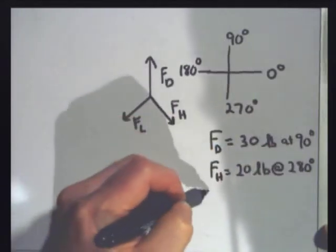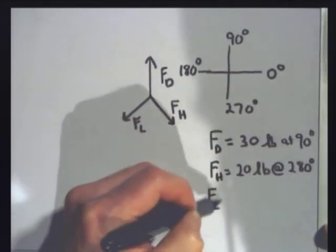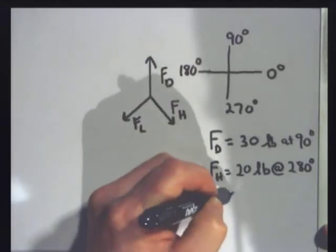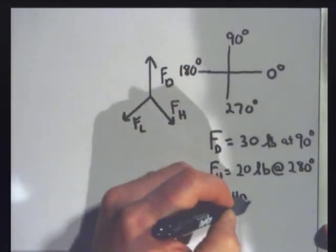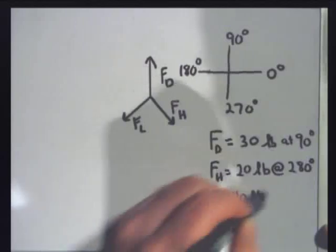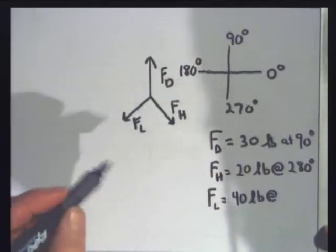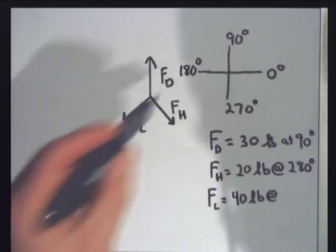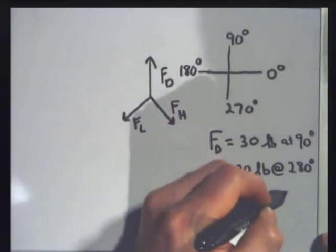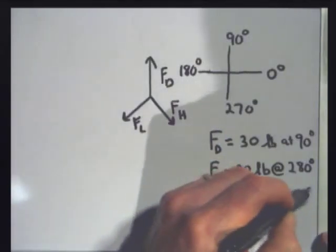And finally, Lando Calrissian is applying a force of 40 pounds, because he's burly, at 180, 270. Let's say about 200 degrees. OK, now we're going to add these up using the head to tail method of adding vectors.